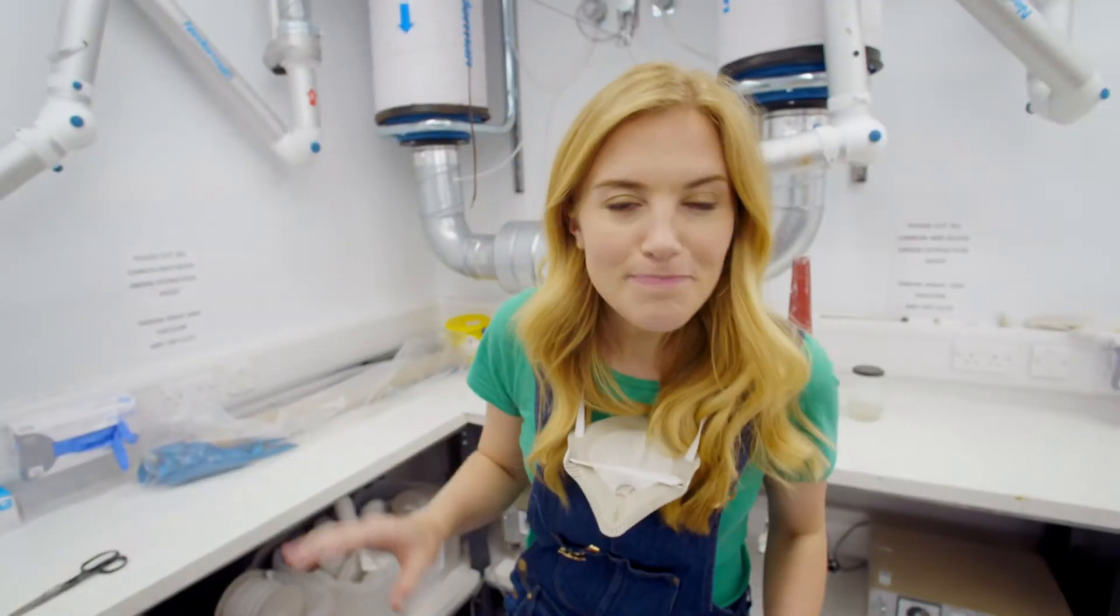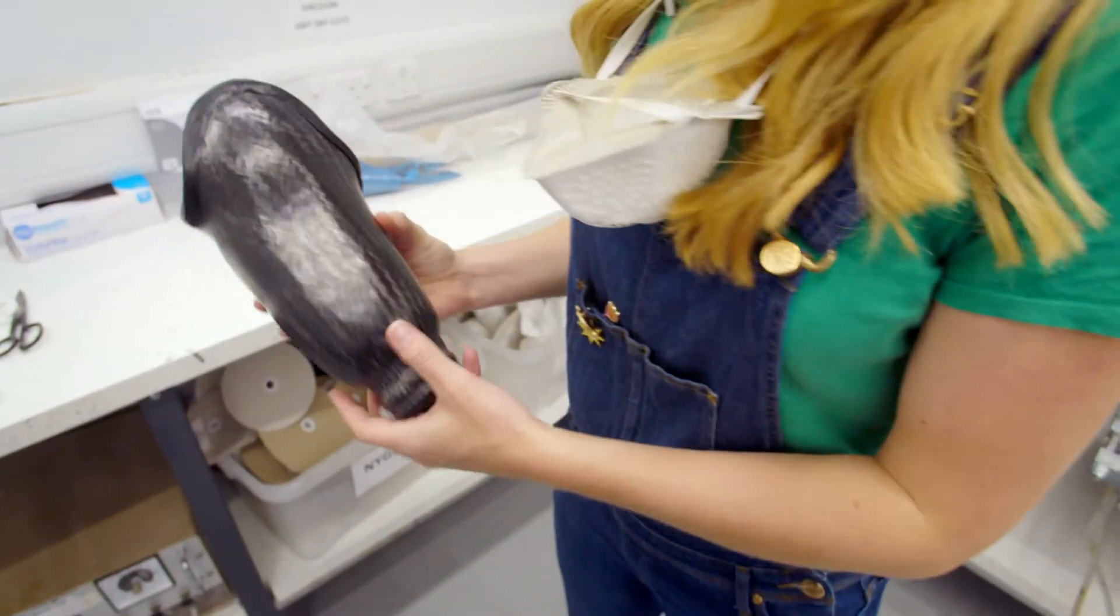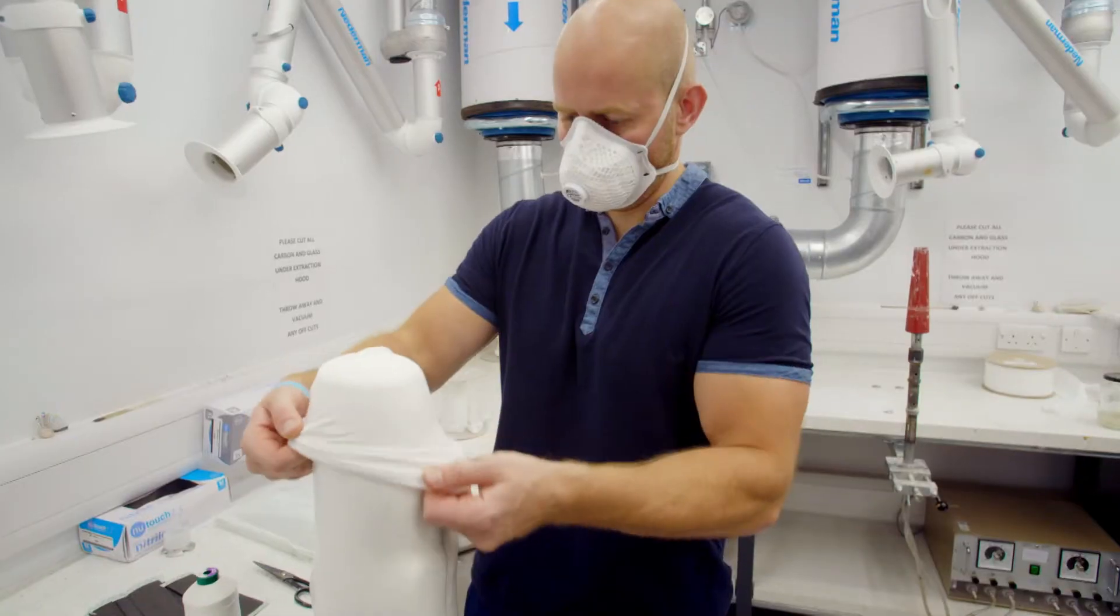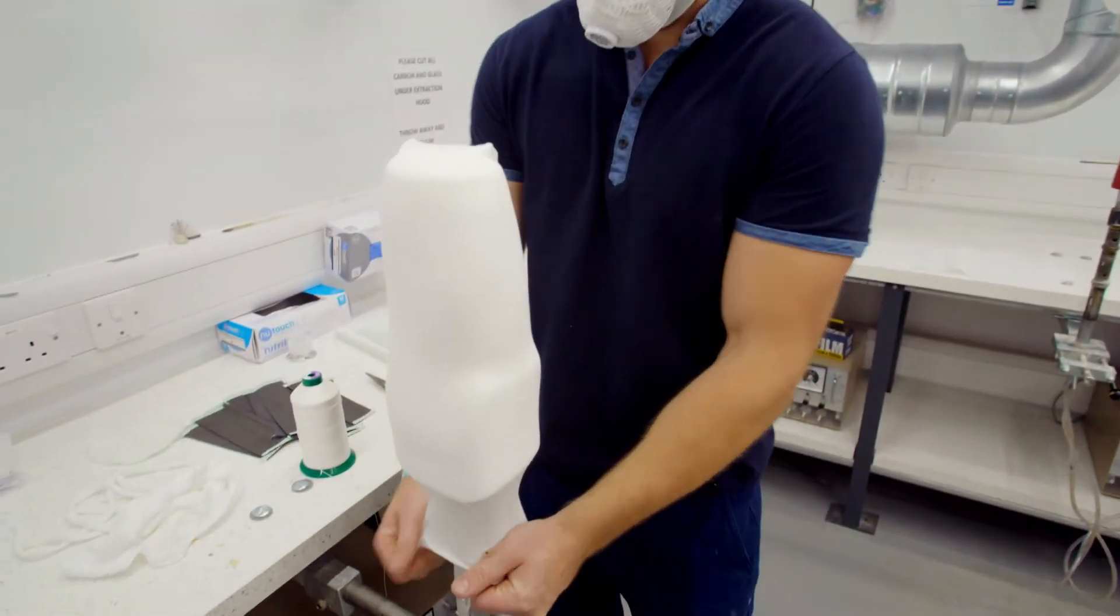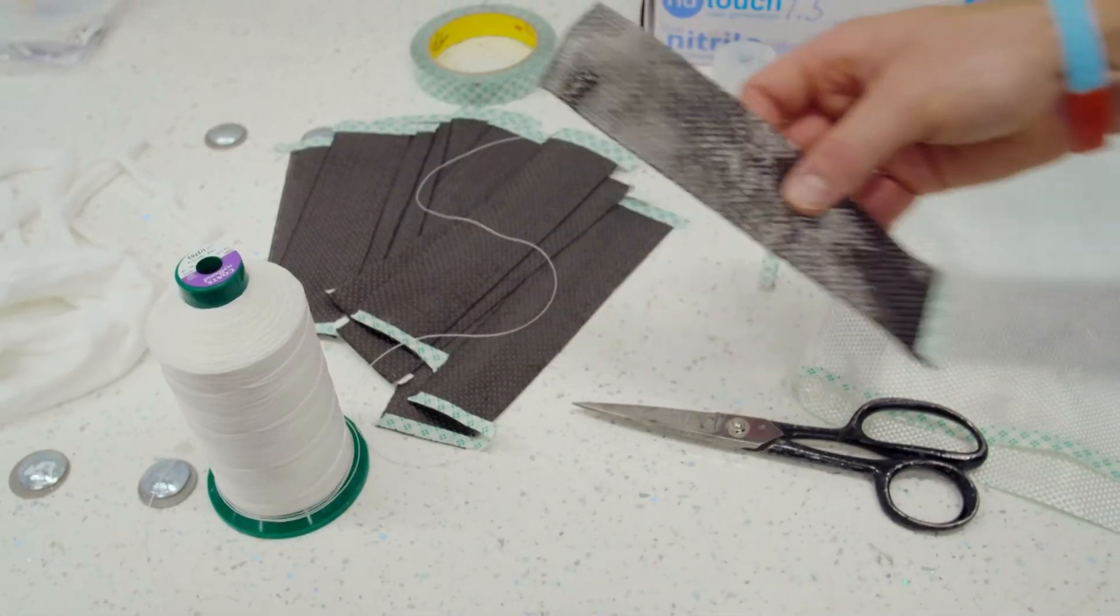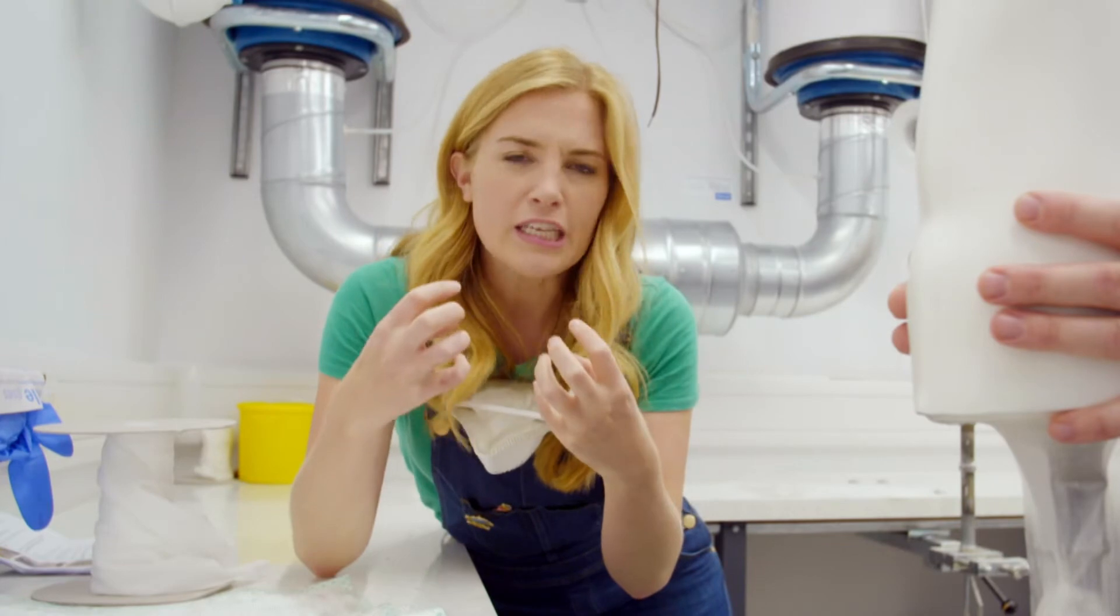The next part to make is called the socket. This is a hard shell, which is formed from three different materials: nylon, glass fibre and carbon fibre. These are really, really strong.